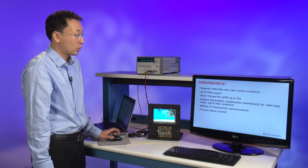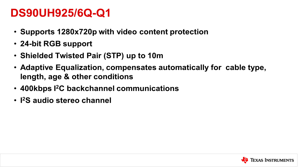Next I would like to highlight these two devices for their important features. The DS90UH925 deserializer can support 720p as well as 24-bit RGB. It can also support up to 10 meters of shielded twisted pair. Two other important features are the adaptive channel equalization, which can automatically compensate for cable type, length, age, and other conditions — which is unique to our TI device. One last feature is the 400 kilobit I2C back channel communication, which is important for the capacitive touch head unit display.